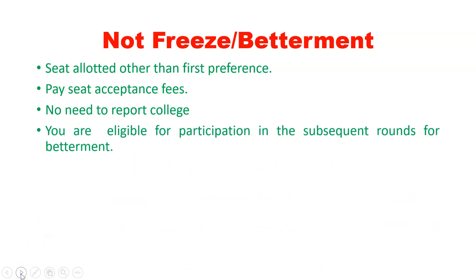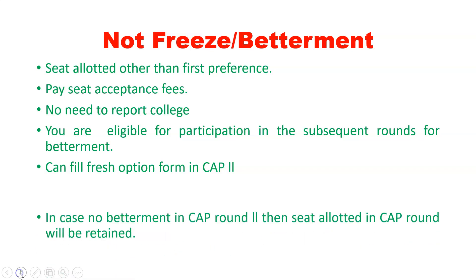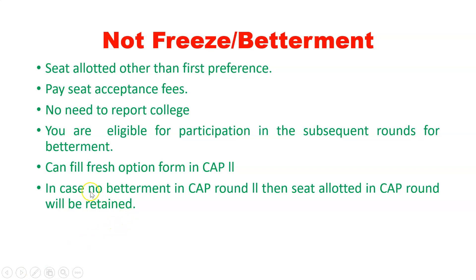You are eligible in the subsequent round for betterment. If you are eligible in the subsequent rounds, you can hold the seat acceptance fee only. If a better seat comes down, you can study at the preferred college. If you don't have a seat acceptance fee, you will receive a seat acceptance fee.